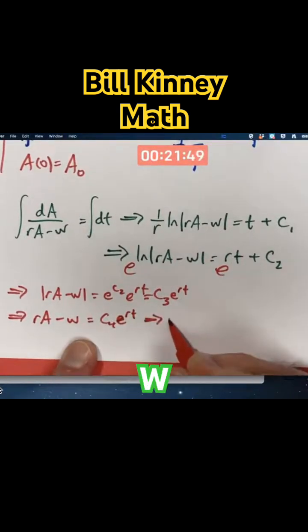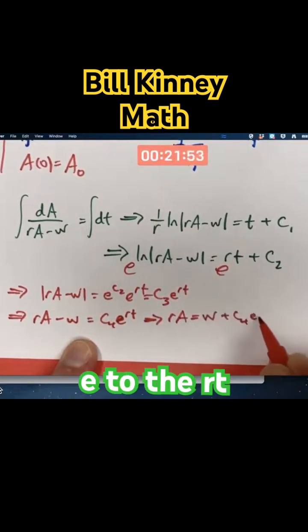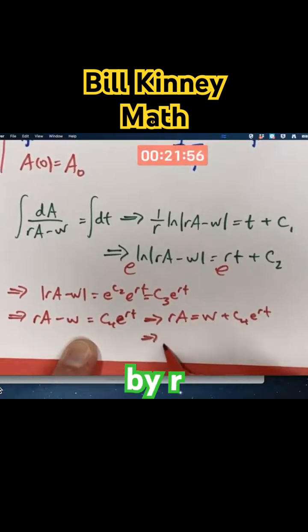I'm going to now add W to both sides. RA is W plus C4 E to the RT. Then I'm going to divide both sides by R.